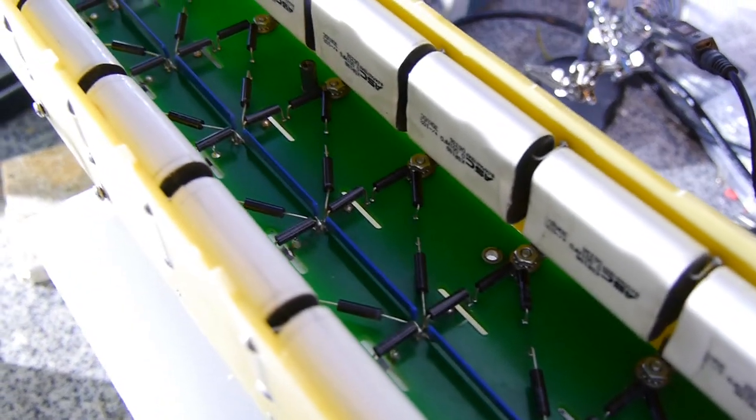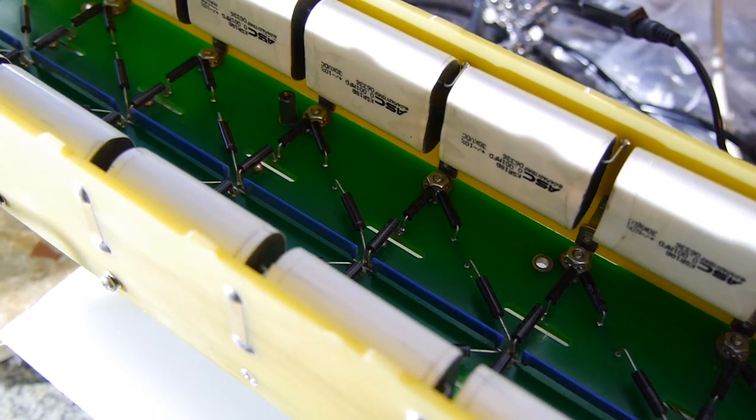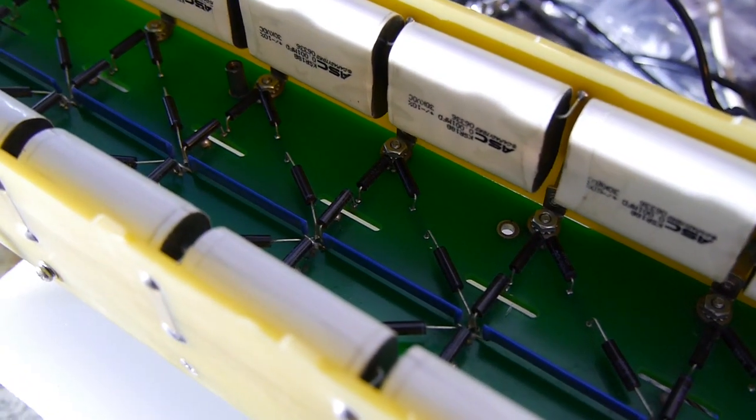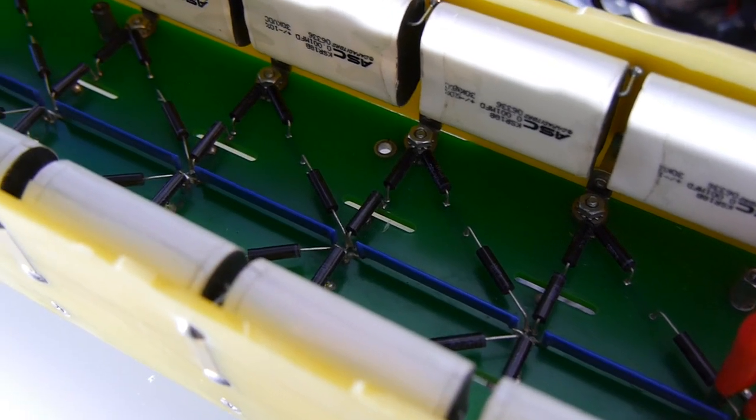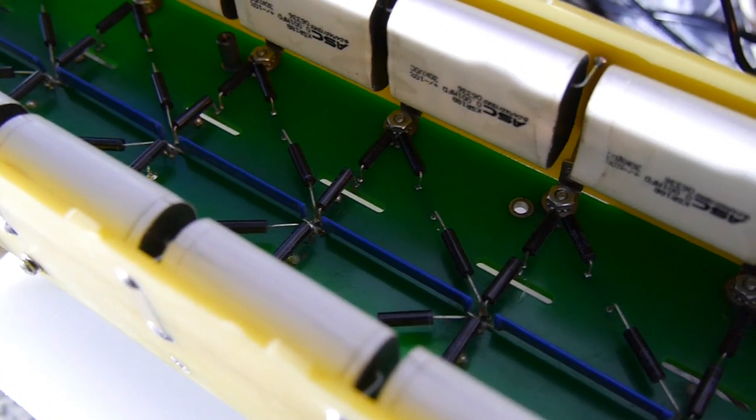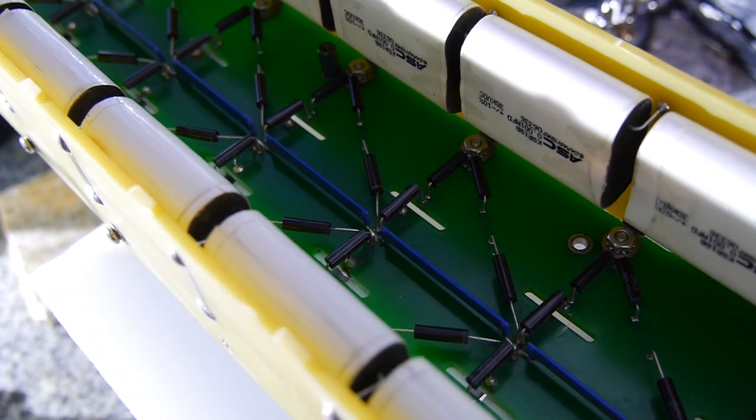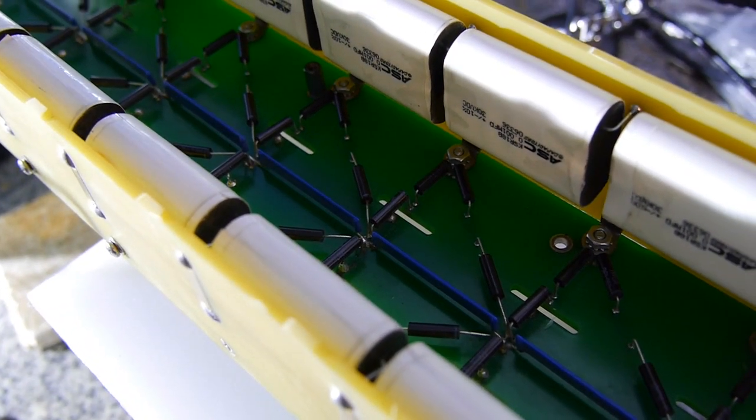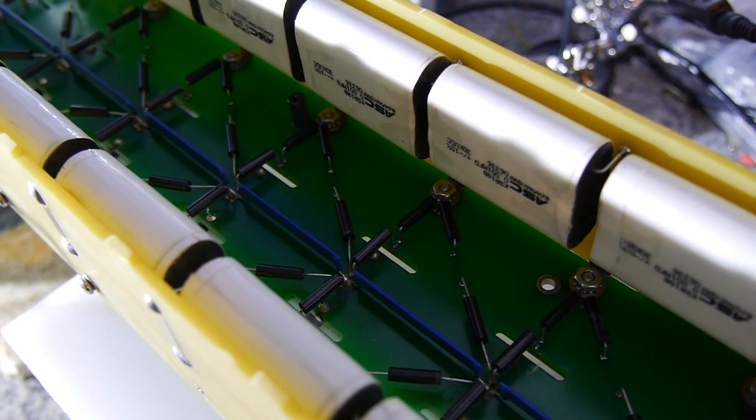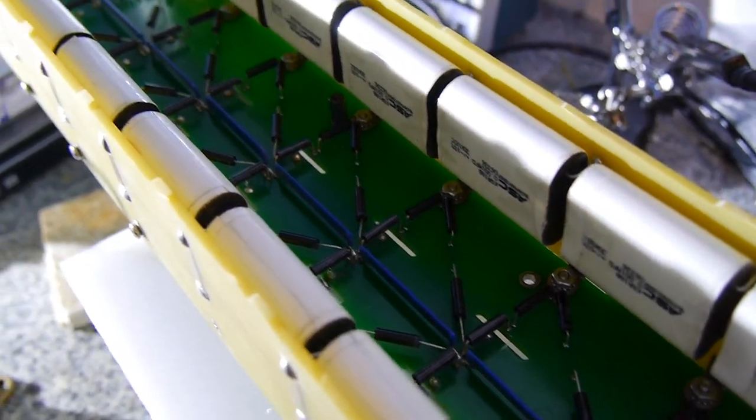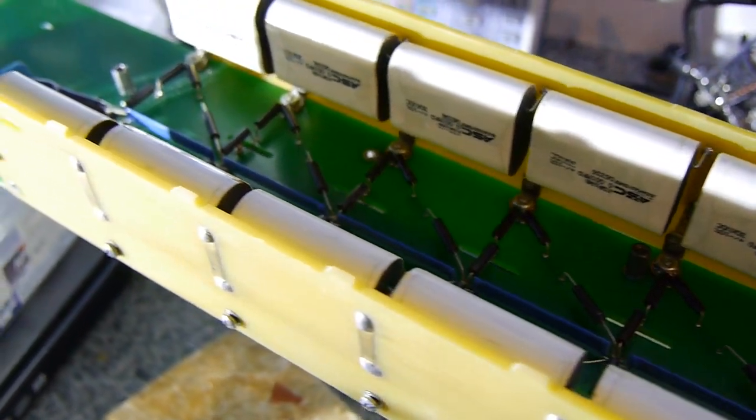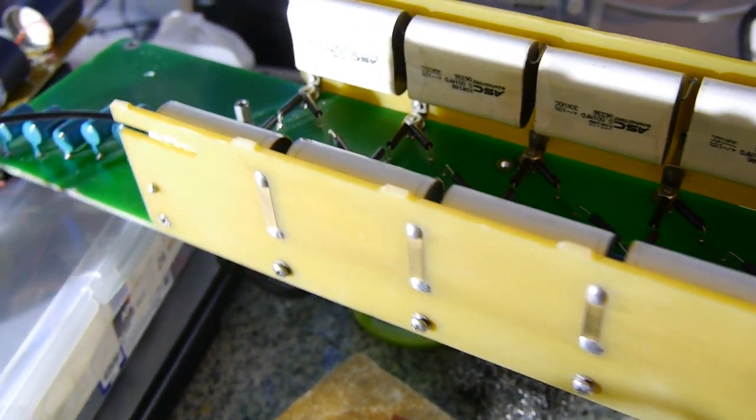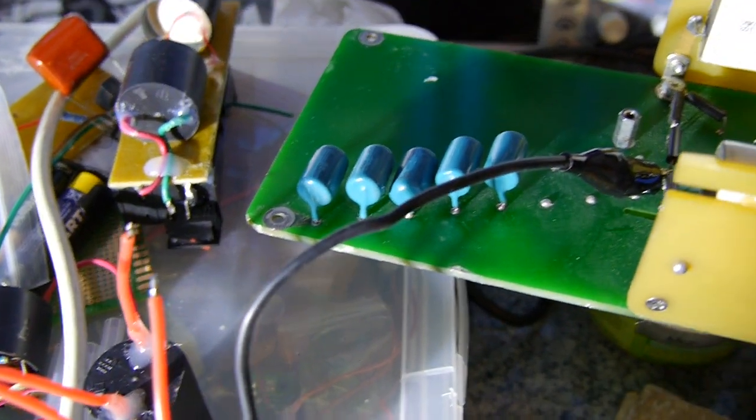This is 20 kilovolt, 100 milliamp diodes, and the blue things are resistors. They serve to equalize and discharge, equalize voltage and discharge the capacitors after turning off.